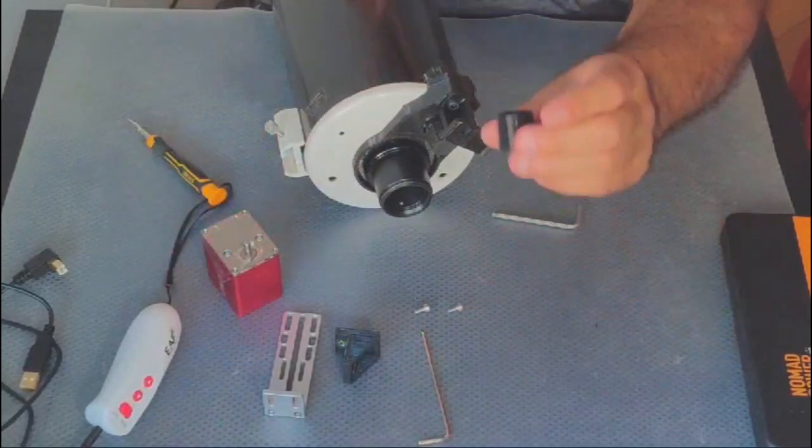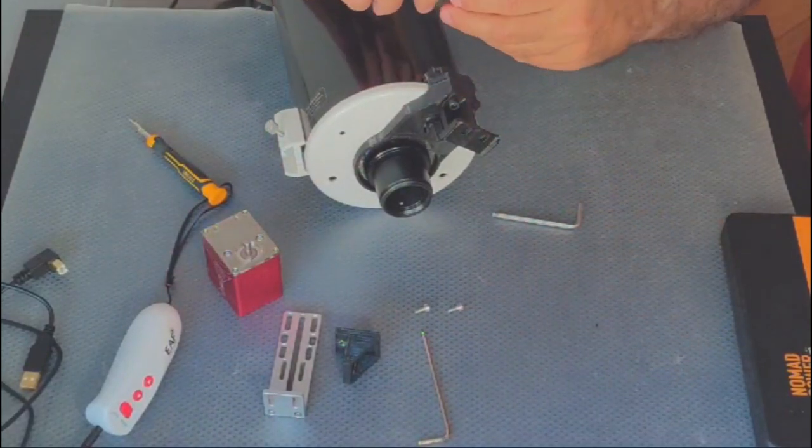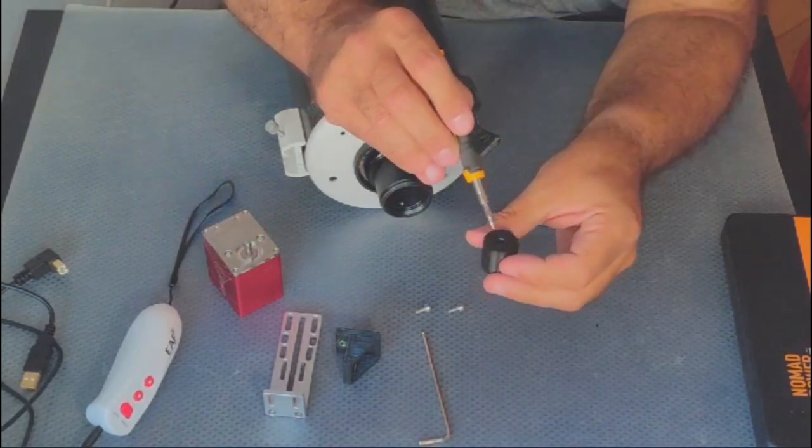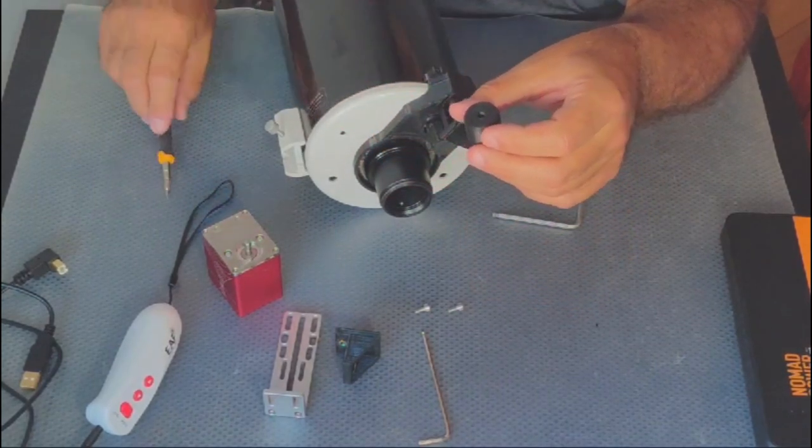The focuser knob coupler has a 5mm D-shaped hole to match the motor axle. The coupler has a 4mm set screw to secure it in place and avoid backlash.